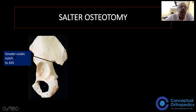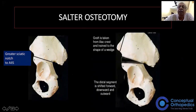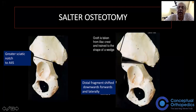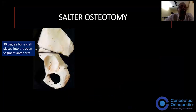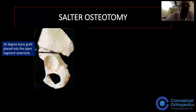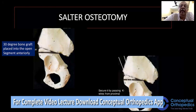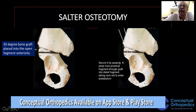The line of osteotomy runs from the greater sciatic notch to just above the anterior inferior iliac spine. The graft is taken from the iliac crest and made into a wedge. The distal fragment is shifted downwards, forwards, and laterally to cover the hip anteriorly and laterally. The 30-degree wedge bone graft is placed into the open segment anteriorly, which redirects the acetabulum. Fixation is achieved with a couple of K-wires.